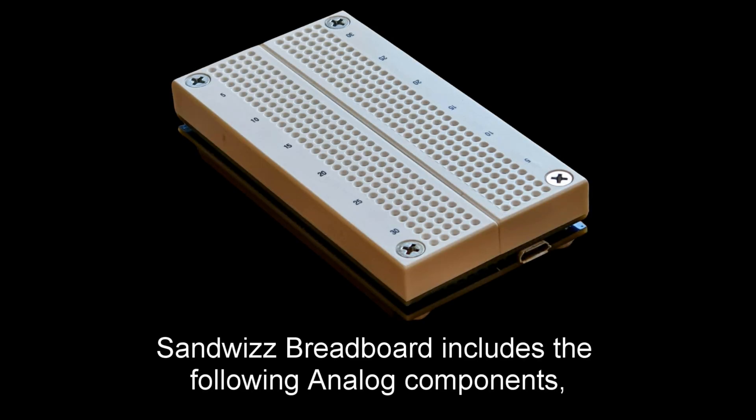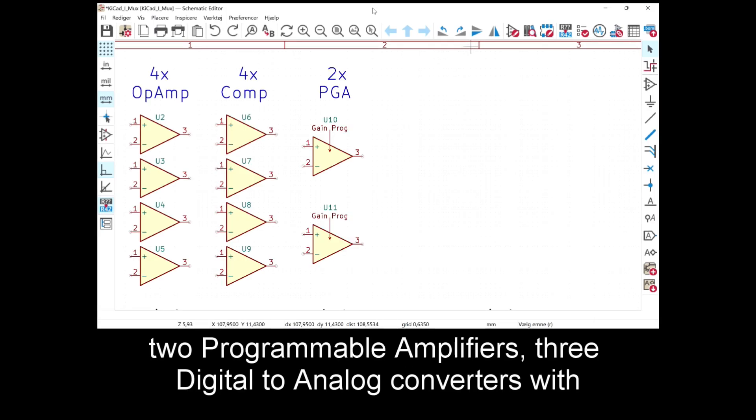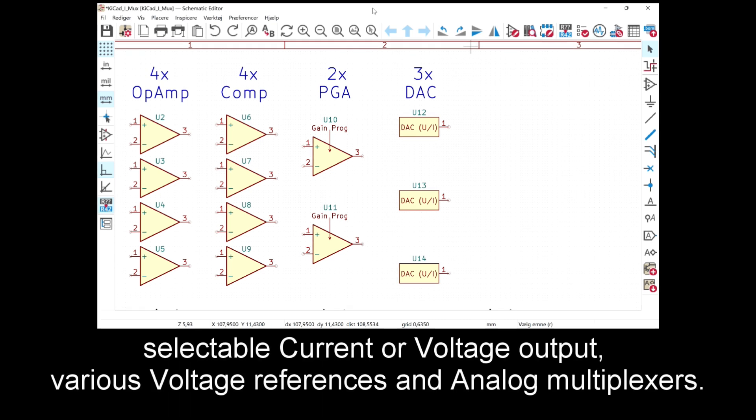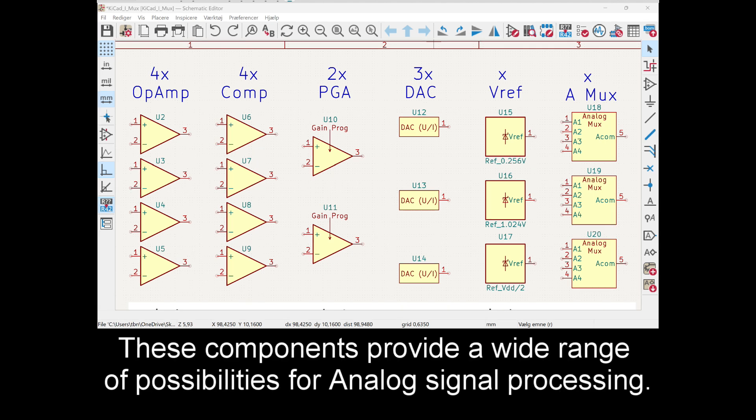The SanWiS breadboard includes the following analog components: four op amps, four comparators, two programmable amplifiers, three digital to analog converters with selectable current or voltage output, various voltage references, and analog multiplexers. These components provide a wide range of possibilities for analog signal processing.